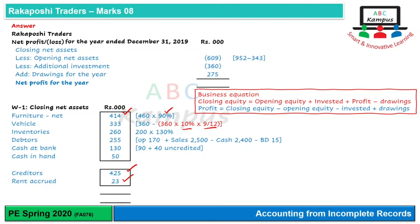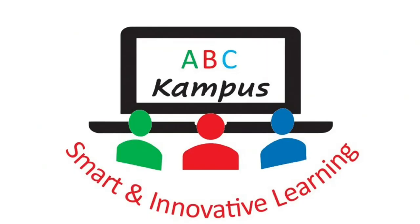Closing assets ka total karenge, closing liabilities ka total karenge — in se closing net assets aayenge, jo 994,000 hai (Working 1). Ab final calculation: Closing net assets − Opening net assets − Additional investment + Drawings = Net Profit. So simply in figures ko rakho aur net profit ki figure aa jayegi — that's all for today, have a good day.